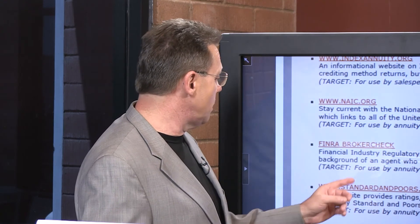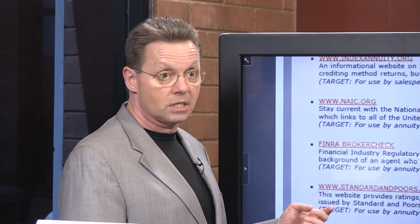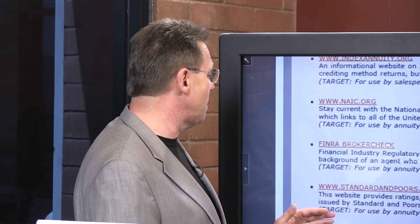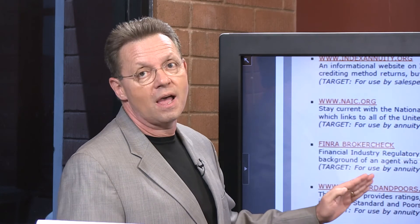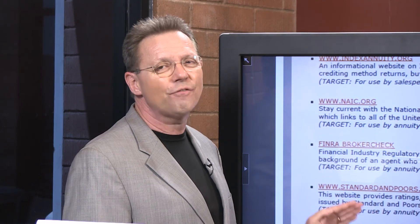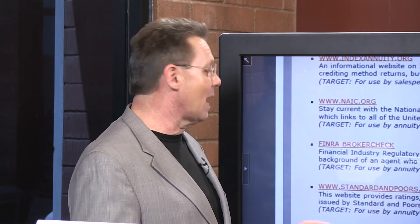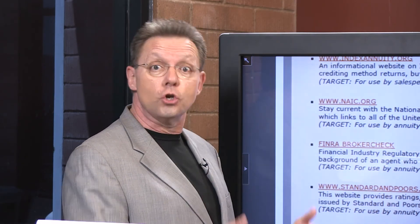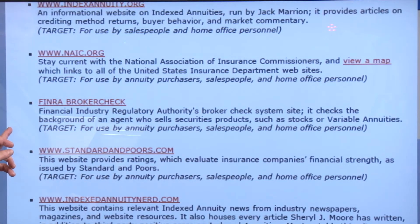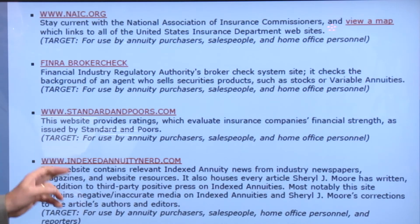Another one I like is standardandpoors.com. The vast majority of indexing — and some variable annuity contracts — is tied to the S&P 500, so you'll want to look at that index. Standard & Poor's is also a carrier financial strength rating service. I look at six different rating services, which I'll show you next week — but the S&P 500 data and carrier ratings are both available at standardandpoors.com.